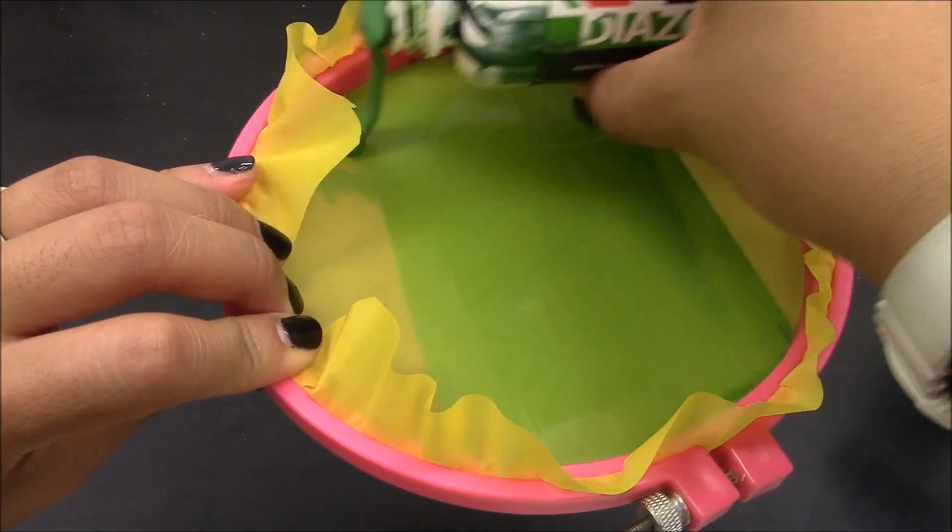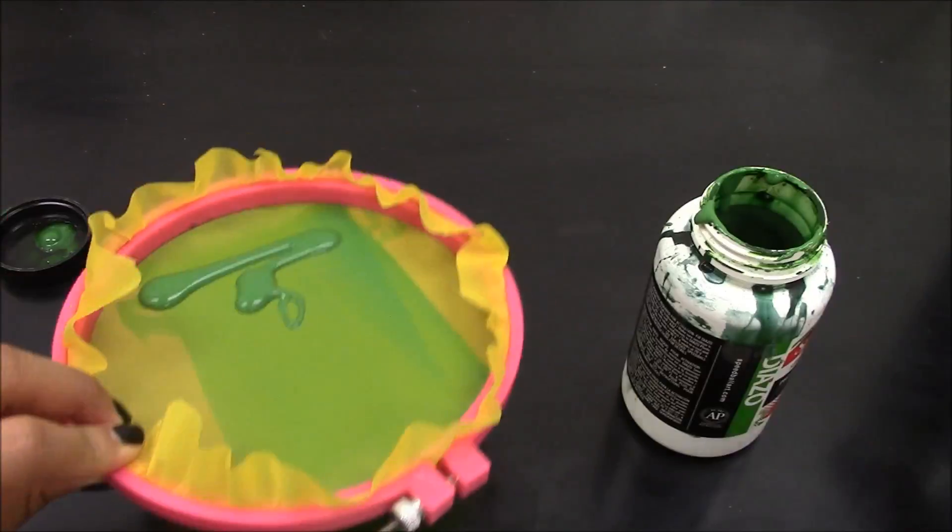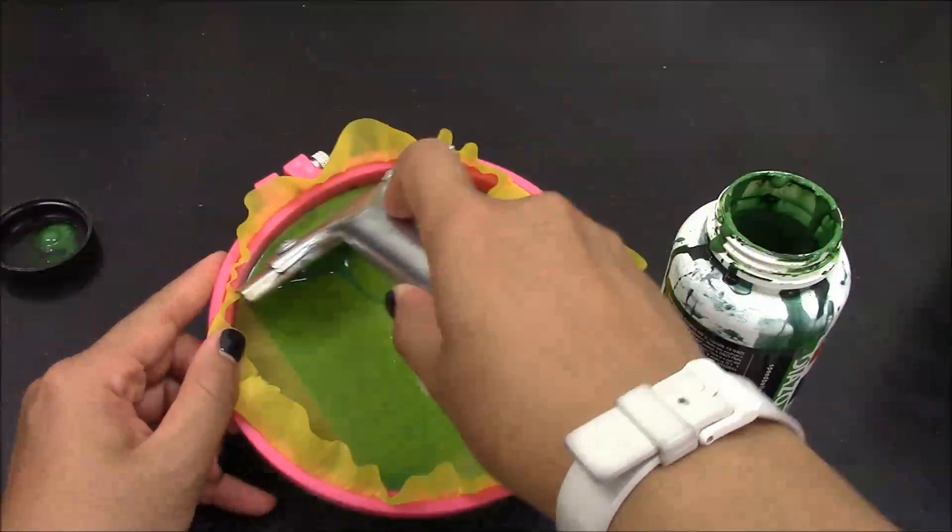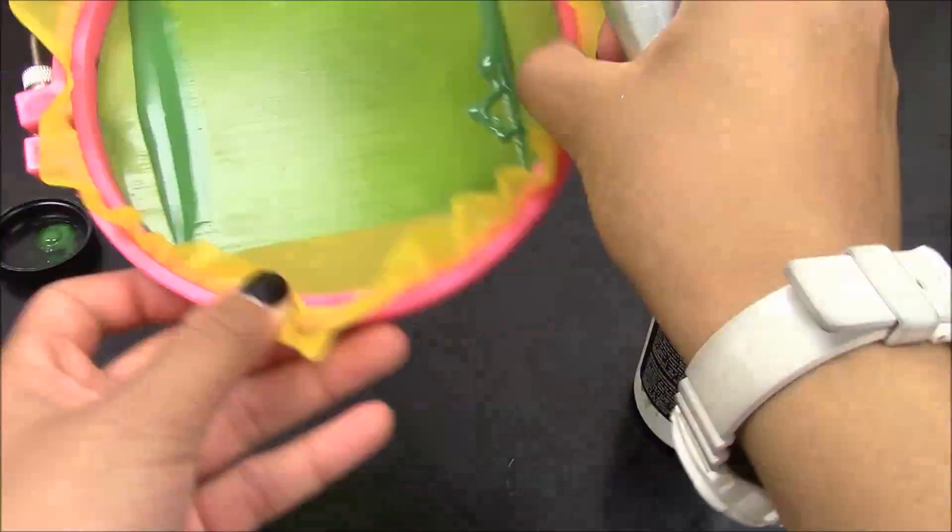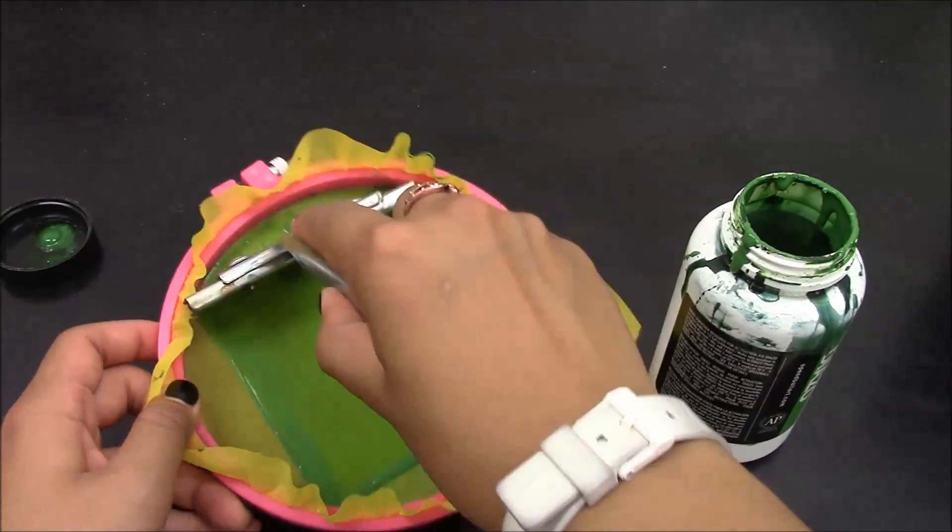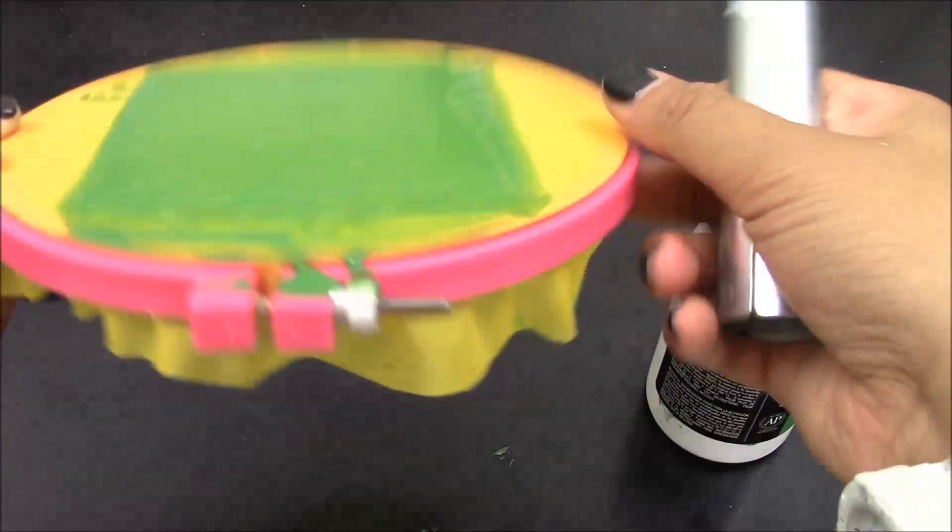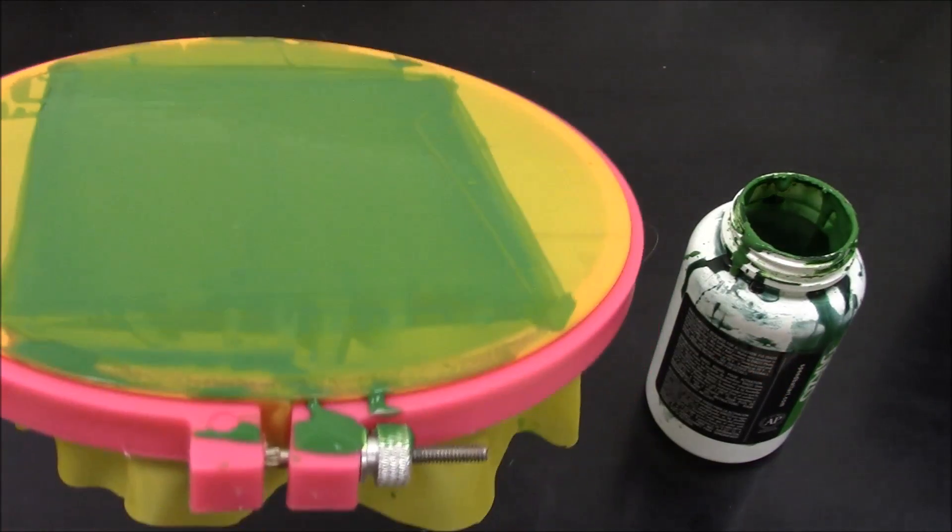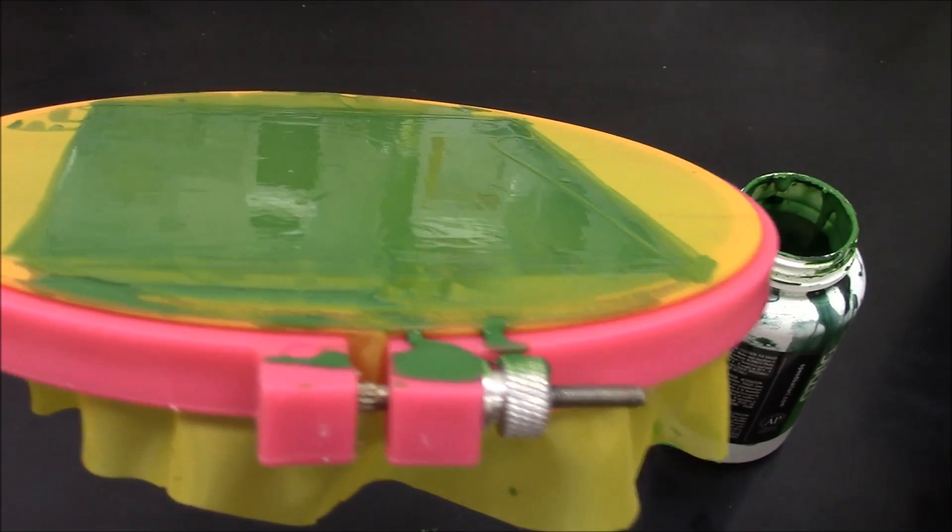Now turn the screen over and repeat the process. Only coat the screen once on the front and once on the back. What you should now have is a layer of emulsion lying on the screen. As you pull the emulsion across the back of the screen, it should have pushed the emulsion out of the other side.